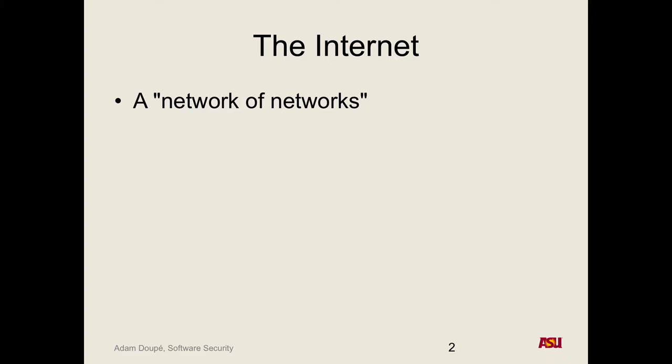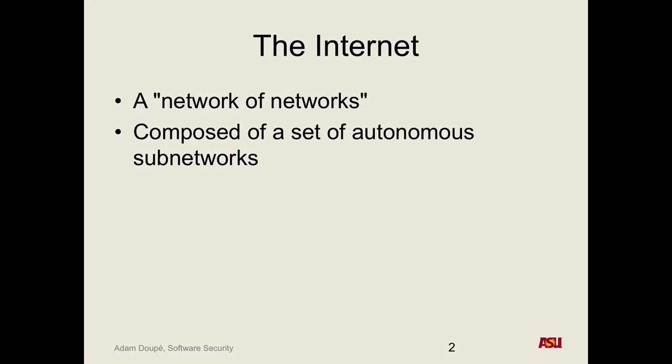The internet is composed of networks of networks. ASU owns a network space, but when we want to access Google.com, that doesn't exist in ASU's network — we need to go outside to get that information and send the results back. The internet is how all of these autonomous networks talk to each other. The beautiful thing is that it has a very open architecture, so all of the protocols are documented out in the open, which is great from a student and educational perspective — you can study exactly how these things work and look for vulnerabilities.